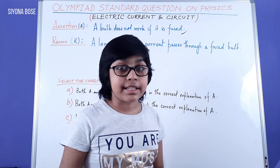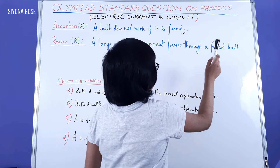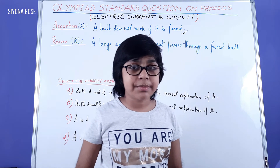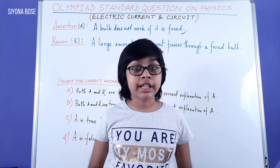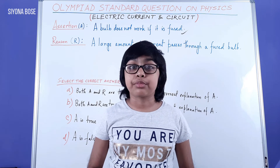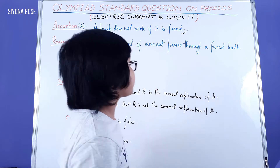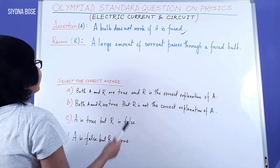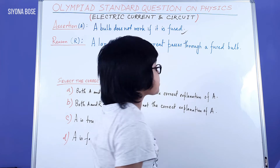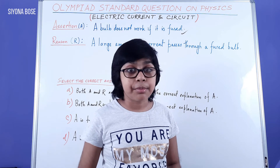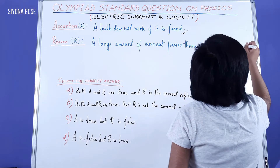Now our reason: A large amount of current passes through a fused bulb. I just explained that a fused bulb means the circuit is broken, and you know that a broken circuit means no flow of electric current. So there isn't any way in which a large amount of current can pass through a fused bulb. So our reason is completely false — we can put a crossover here.